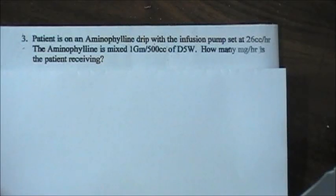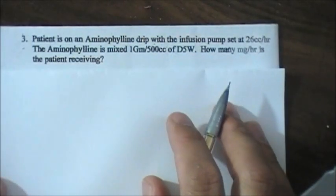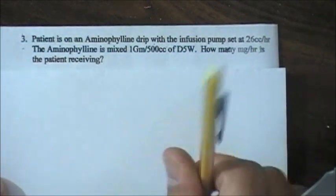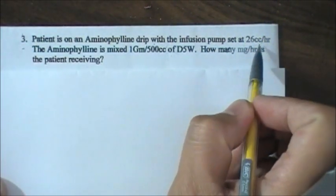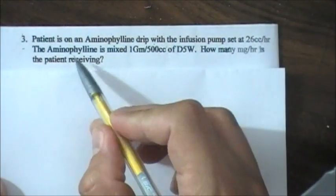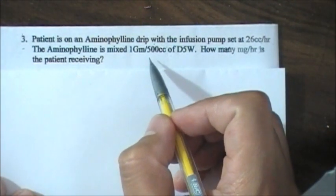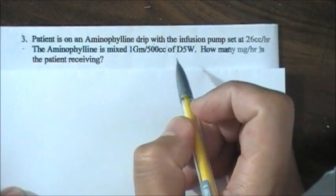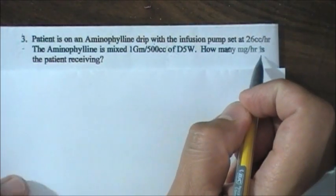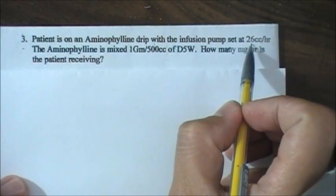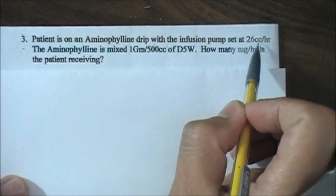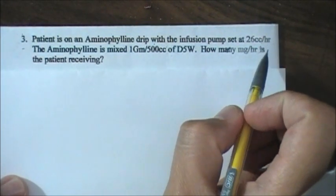Okay guys, our next problem is this: Patient is on an aminophylline drip with the infusion pump set at 26cc per hour. The aminophylline is mixed 1 gram per 500ml of D5W. How many milligrams per hour is the patient receiving? So patient is receiving 26cc per hour, 26ml per hour, and how many milligrams per hour is he receiving?